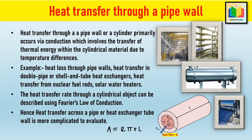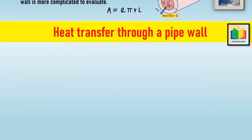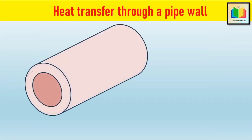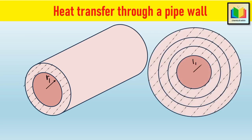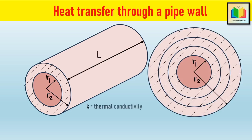In this situation we must take into account the log mean cross-sectional area, A_m. Consider a thick-walled hollow cylindrical pipe with inner radius r1, outer radius r2, and length L. Let k represent the thermal conductivity of the cylinder's material.